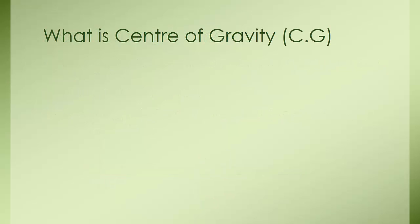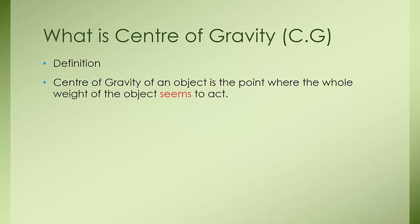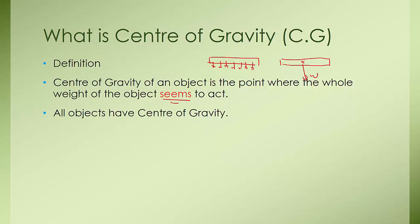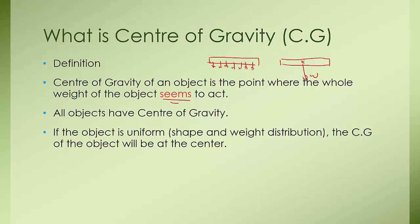To summarize: the center of gravity of an object is the point where the whole weight of the object seems to act. The word 'seems' is used because we know the actual situation involves many small weight forces on the ruler, but we represent them by saying there is a center of gravity where the weight acts as one. All objects have a center of gravity, and if the object is uniform in shape and weight distribution, the center of gravity will be right at the center.